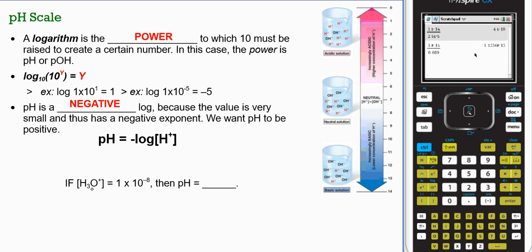So here's an example. If the hydrogen ion concentration or hydronium concentration is 1 times 10 negative 8, then pH must be 8. I'm going to pin.